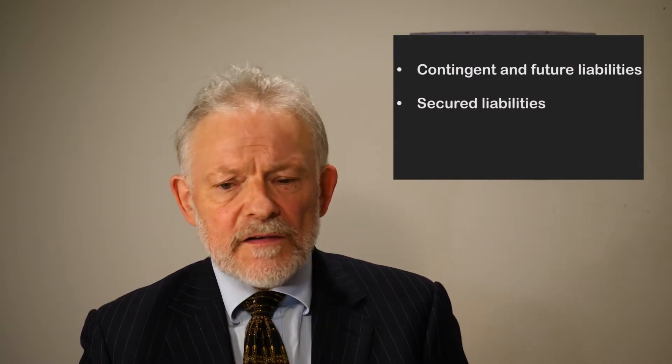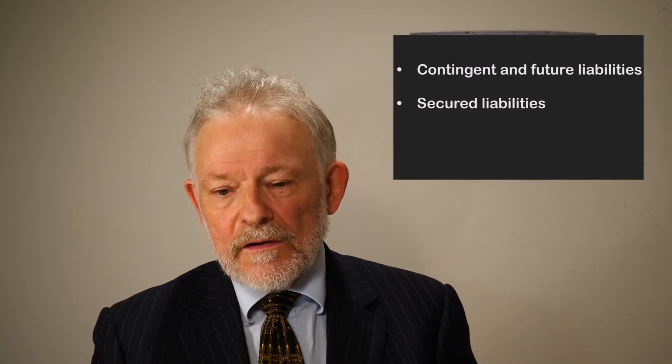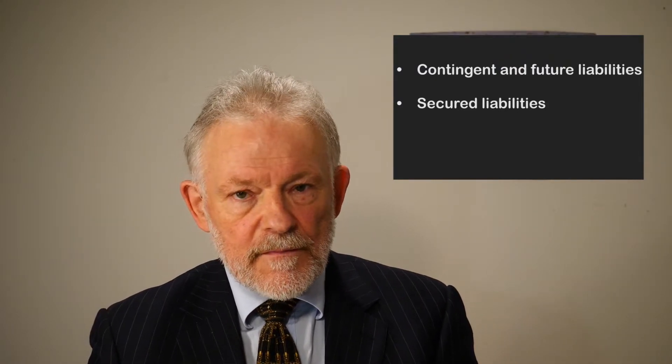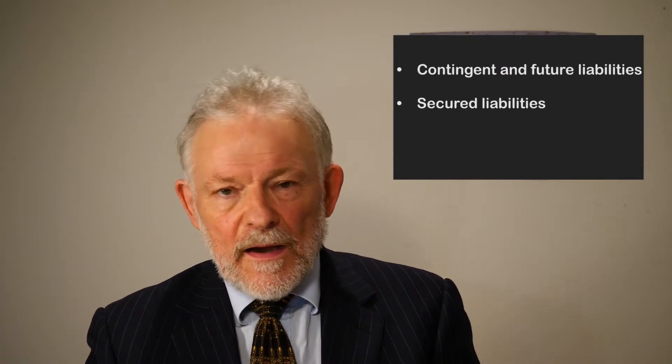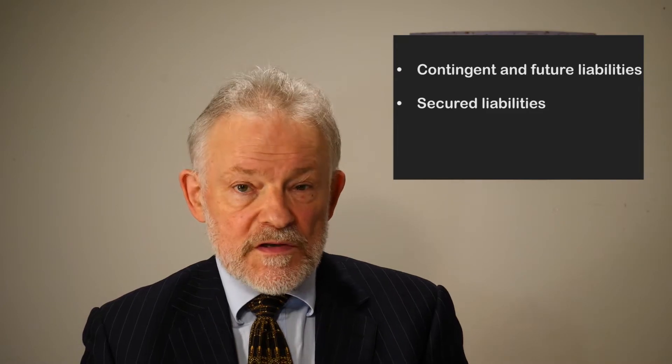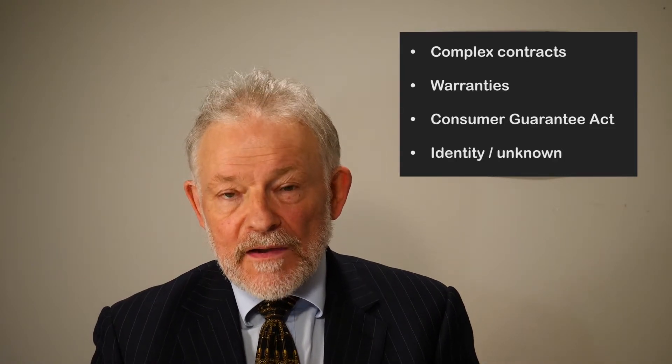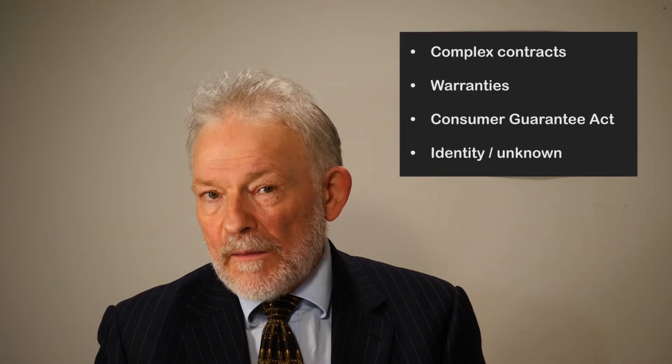The special cases are contingent and future liabilities on the one hand, and secured liabilities on the other. Contingent liabilities come from complex contracts — the sorts of things I'm thinking of are warranties, for example. Plenty of businesses promise to stand behind the product they sell or the service they deliver and will make good. So if there's a large number of customers, somewhere amongst that pool there will be people who have got a right to have a repair — they happen to be creditors of the business. It's just that the company doesn't know who they are. Don't make the mistake of thinking it's only where there's a clear contract with a warranty attached; there might also be obligations arising by operation of the Consumer Guarantees Act.